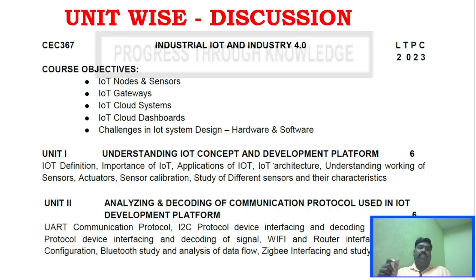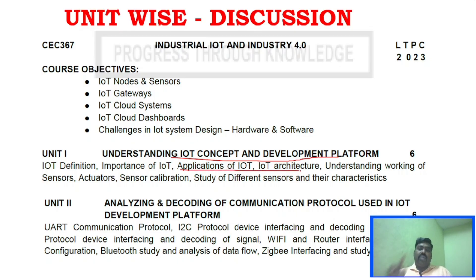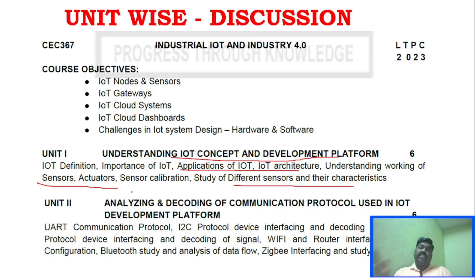Unit 1 and Unit 5 are very simple. Unit 1 is about understanding IoT concepts and the development platform — just an introduction covering IoT's importance, definition, application, and architecture. You can definitely answer one question on IoT architecture. Similarly, different sensors — this is more than enough. But being an ECE student, confirm your understanding of sensor working and actuators. Apart from this exam, sensor working and actuator working are things you should know as an ECE student.